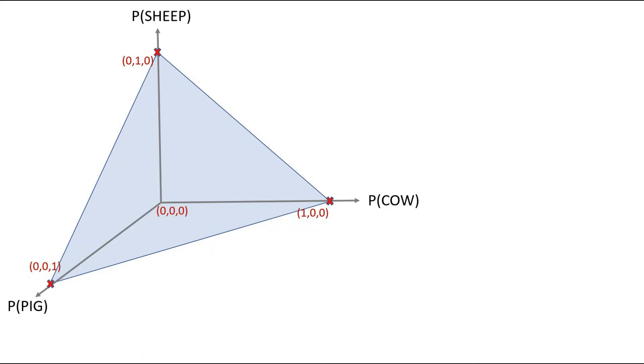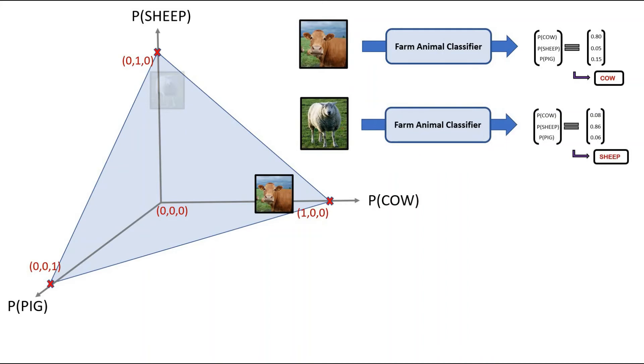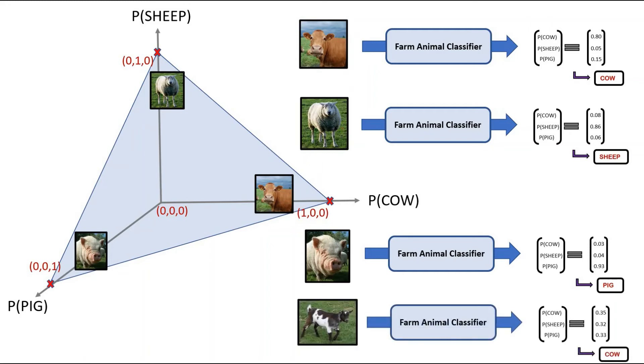So let's see what this means for our examples. With the cow image, we plot the cow at the coordinate with x value 0.8, y value 0.05, and z value 0.15, which is about here. We can do a similar plot for the sheep image, and then a similar plot for the pig image. We can finally take the weird image and also plot it onto the simplex.